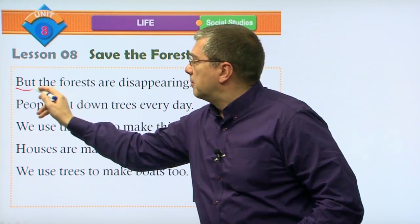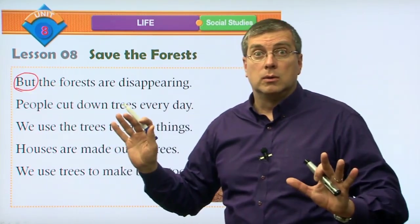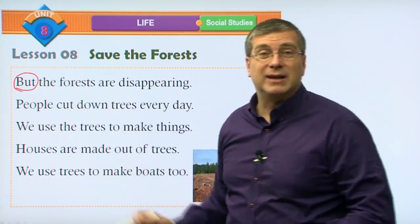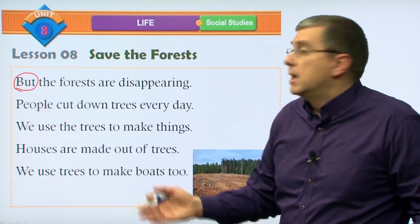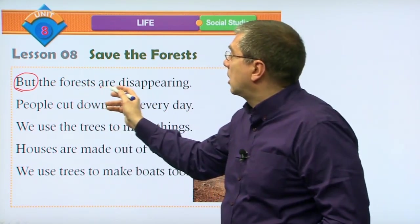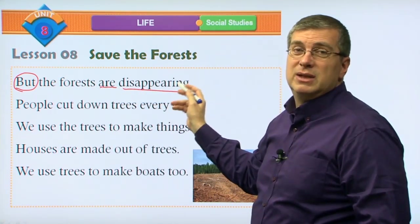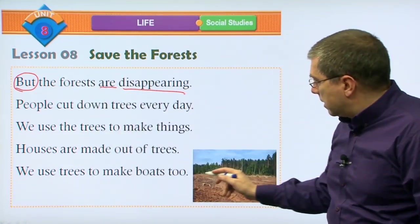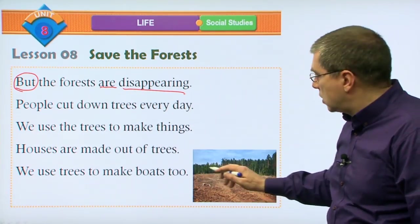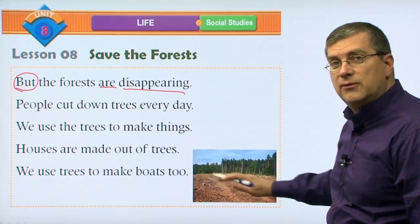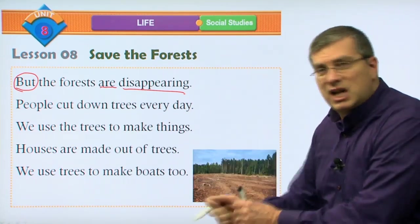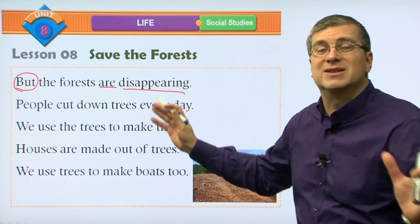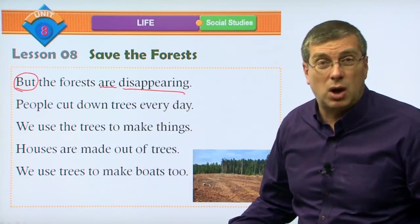But - and 'but' tells us there's a problem - but the forests are disappearing. Disappearing means going away. Look at this picture: it's just ground, dirt. There aren't any trees in the front of this picture - all those trees have been cut down. They're gone. So these trees are disappearing. The forests are going away. This is a problem.